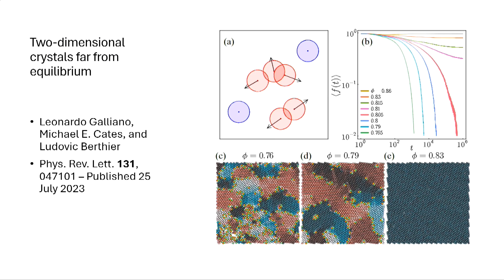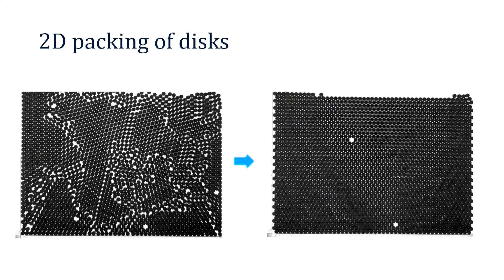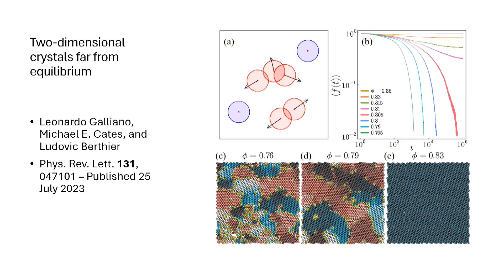The idea is you start with a system full of grain boundaries and want to reach a state with only point defects or no defects at all. Linear defects are very hard to remove from these systems. People have looked at this in simulations using random organization models: you move particles randomly, and if there is an overlap, you move those particles in random directions.